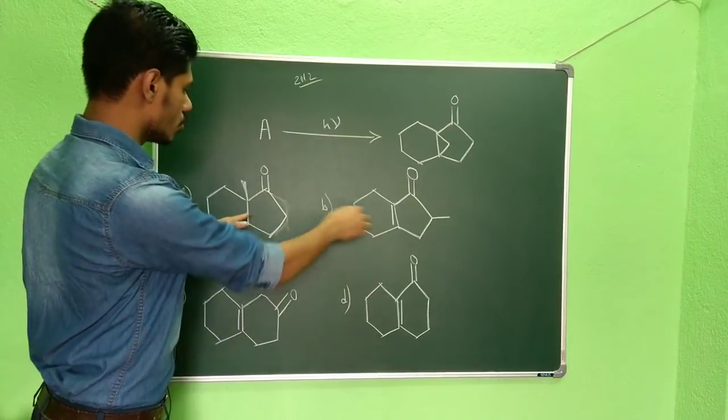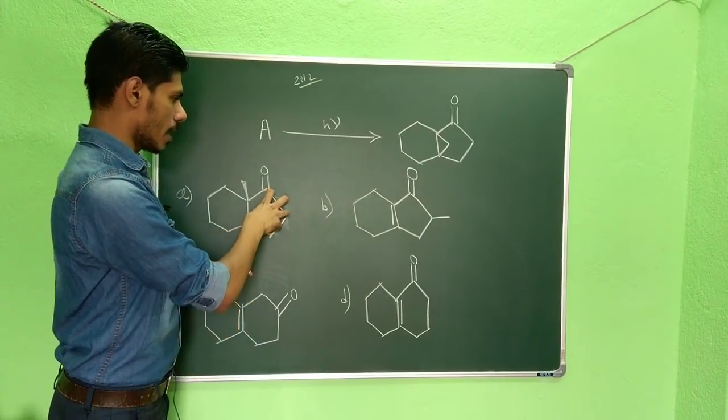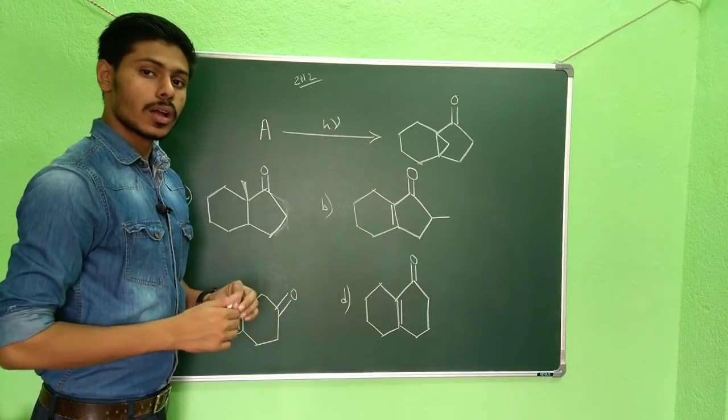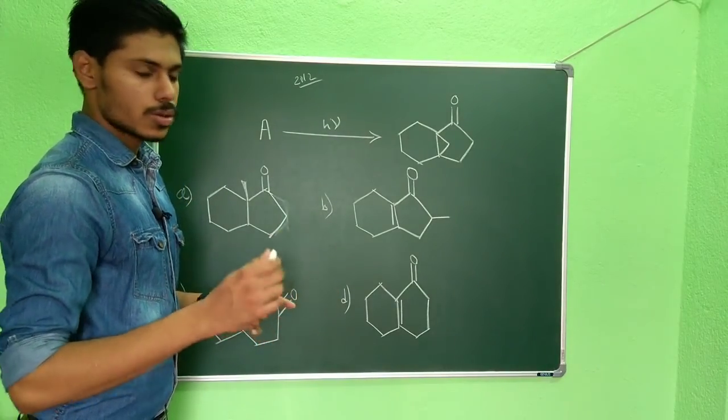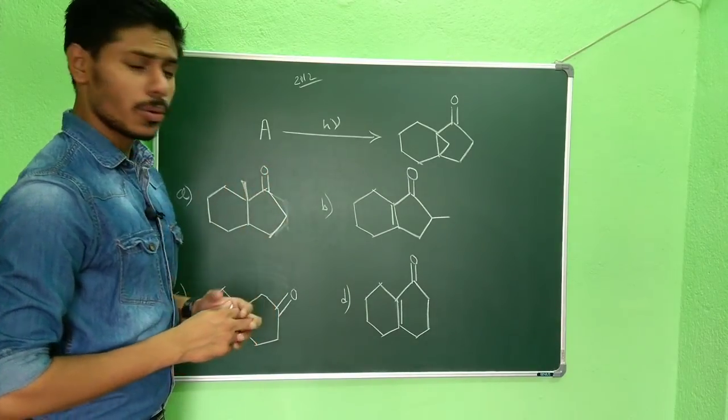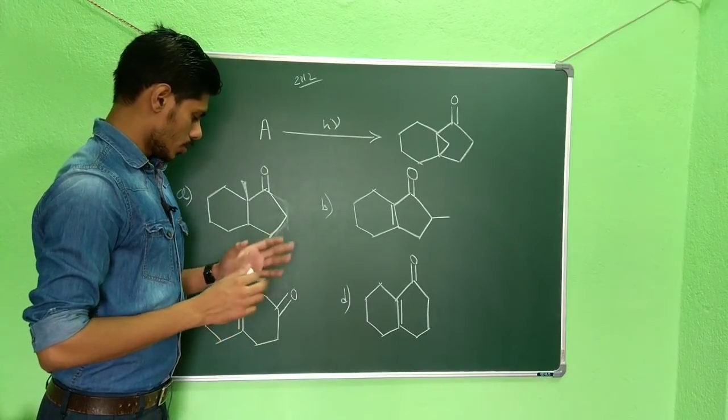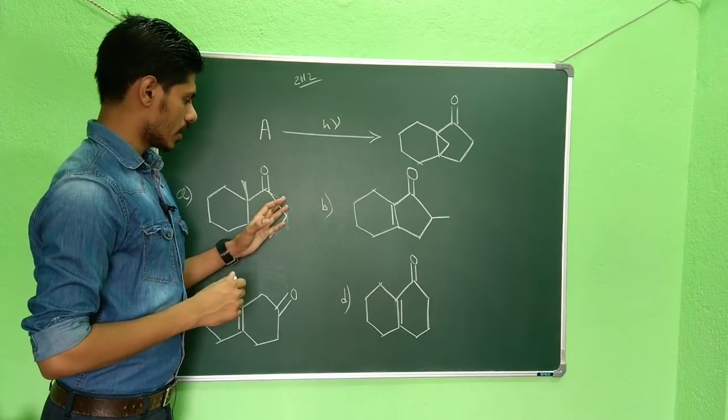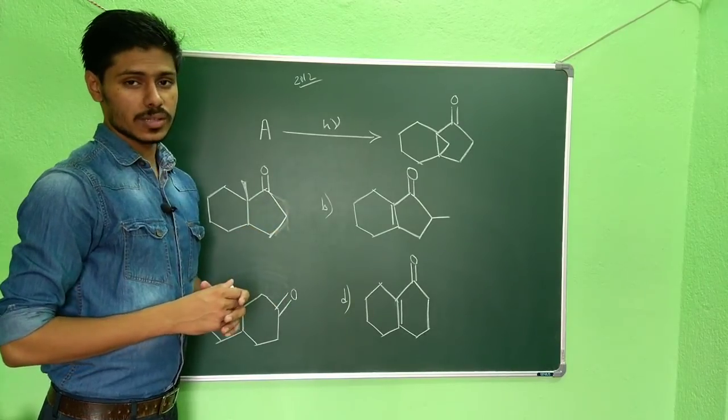So in these two cases you can see two five-membered rings are given, and in option C and D two six-membered rings are fused. So you have to predict the correct answer. Now how you can approach this problem? First of all you can see in all cases there is no suitable gamma hydrogen atom, so the possibility of Norrish type 2 reaction is ruled out.